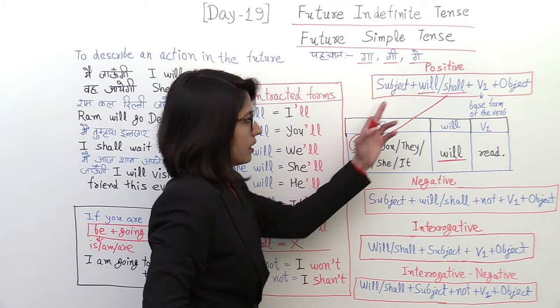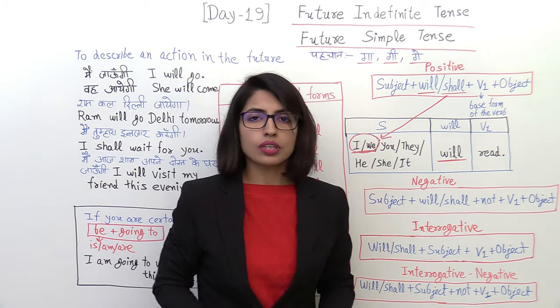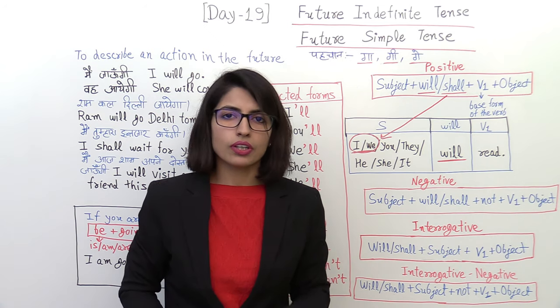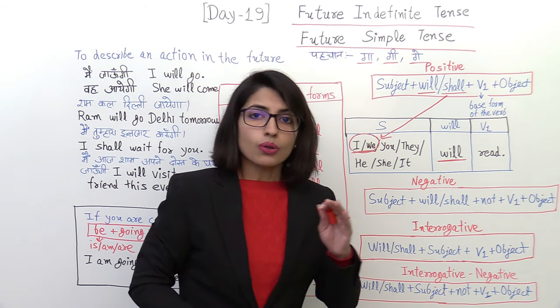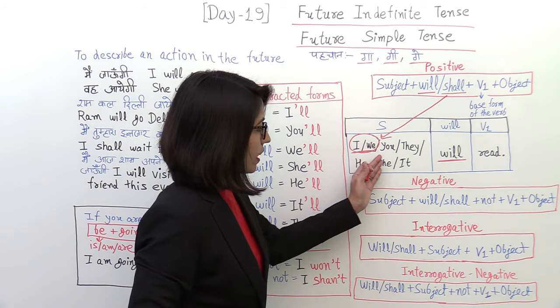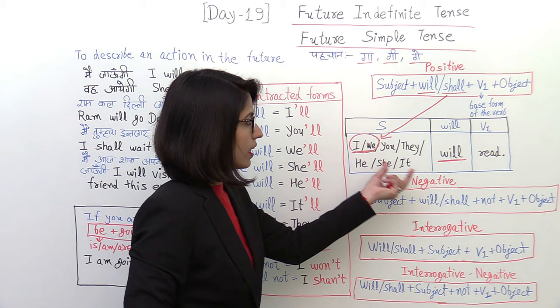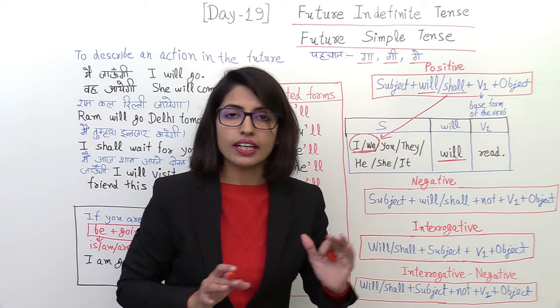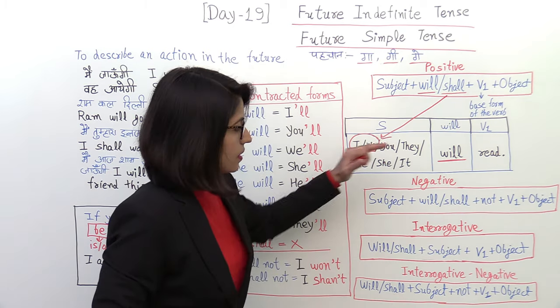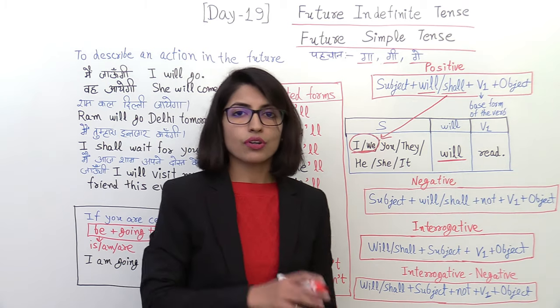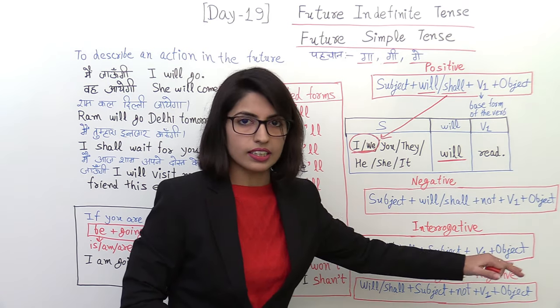With I and we, you can use shall. But let me tell you that in modern English, shall has become very uncommon. So if you are using will with I and we, it's not wrong. And if you use shall with I and we, it's also not wrong.